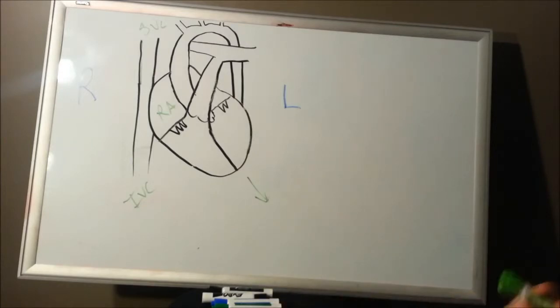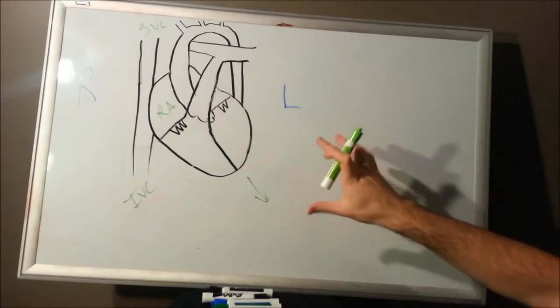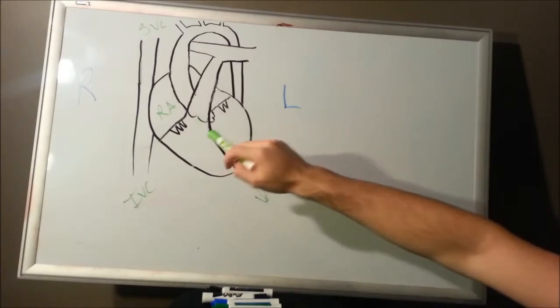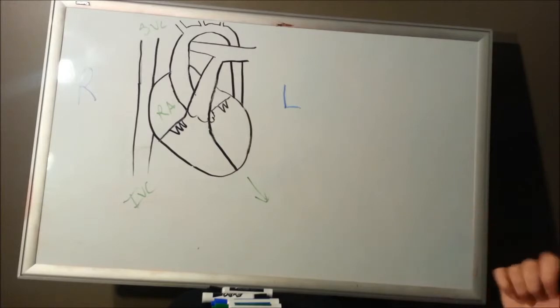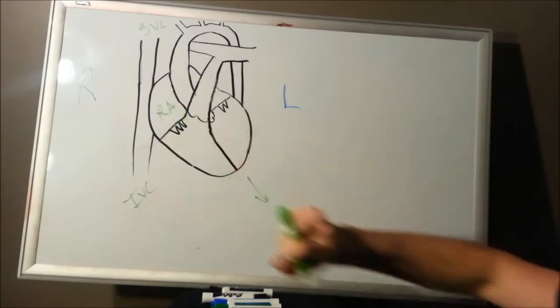The right atrium, just like your house, the atrium accepts things. It's kind of like your entryway of the house. It accepts people. Just like that, your heart, the atrium of your heart is going to accept blood. So, the right atrium will accept blood from the body.